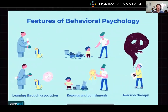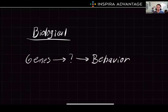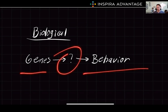Some other major theories you need to know for psychology are the behaviorist perspective. The behaviorist perspective posits that personality develops as a result of operant conditioning, which is based on rewards and punishments. We also have the biological perspective, which says that all behavior can be explained as a result of genetic expression — your genes — and then there's some black box that results in behavior.